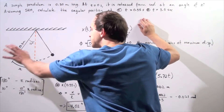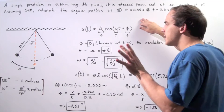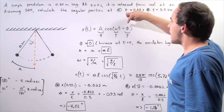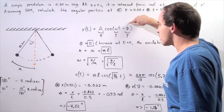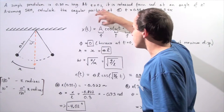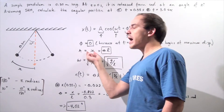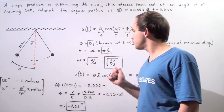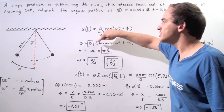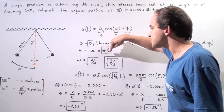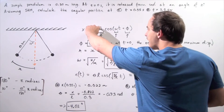Because our object begins at the positive maximum displacement, our phase angle phi is 0. As for our amplitude A, the maximum displacement is equal to our length l multiplied by our angle in radians. So we simply take this quantity and plug it in for A.